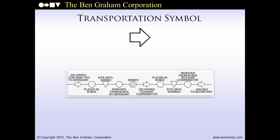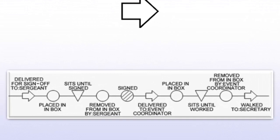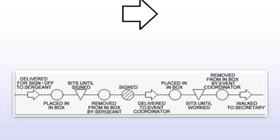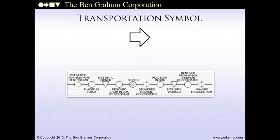Transportation steps are represented with an arrow. They show movement from one work area to another and are not used for small movements within a work area. In this snippet, there are three transportation steps — in each case you see the location where the document travels to. Until you reach the next transportation step, the document hasn't left the work area. Passing an item from one person to another within a work area is sometimes mistaken as transportation — a transportation symbol represents a change of location beyond the immediate work area.